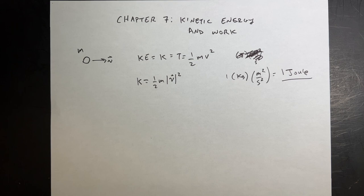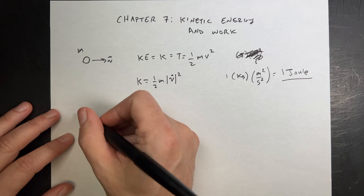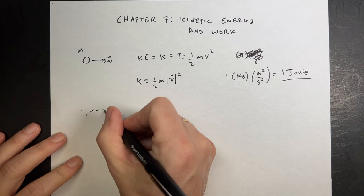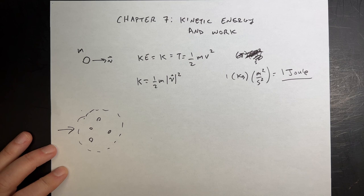Now, what about work? You can think of work as a way to add energy to a system. Suppose I have some imaginary grouping of stuff — a system. If I have some energy input into the system, the energy of the whole thing is going to change. So one of the ways we can calculate the energy input is with work.